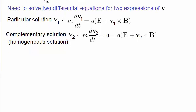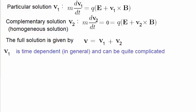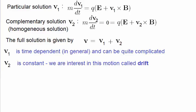The full solution becomes a superposition of the particular solution v1 and the complementary solution v2. You can see that v1 is going to be explicitly time dependent, and the motion will most likely be quite complicated. Although under some circumstances this complicated motion may be of interest, in general we really just want to know about the average motion of the particle. The complementary solution is constant because the differential equation is equated to zero — this is the drift velocity, and it's the one we're interested in, since it tells us the average movement of our particles.